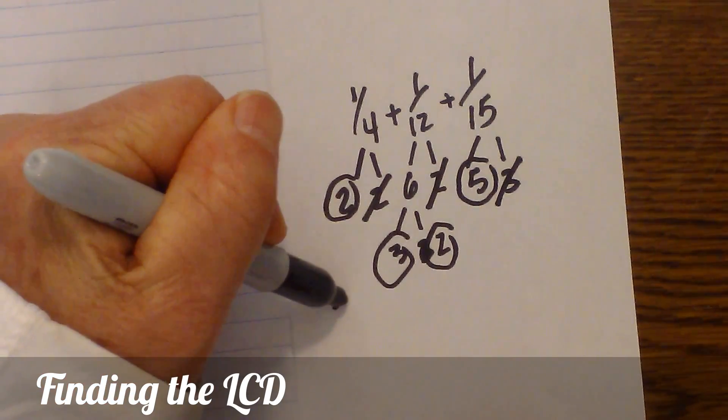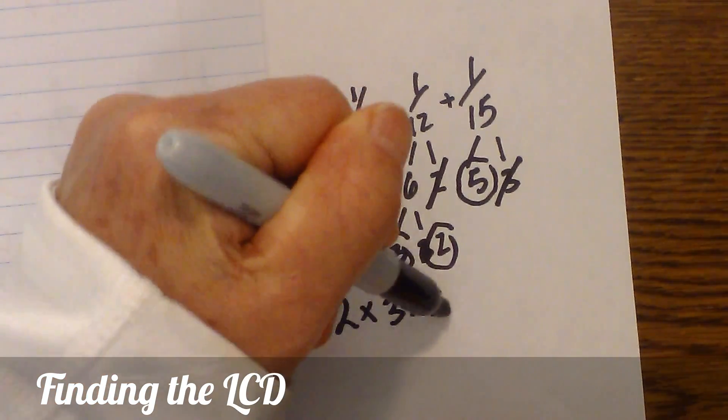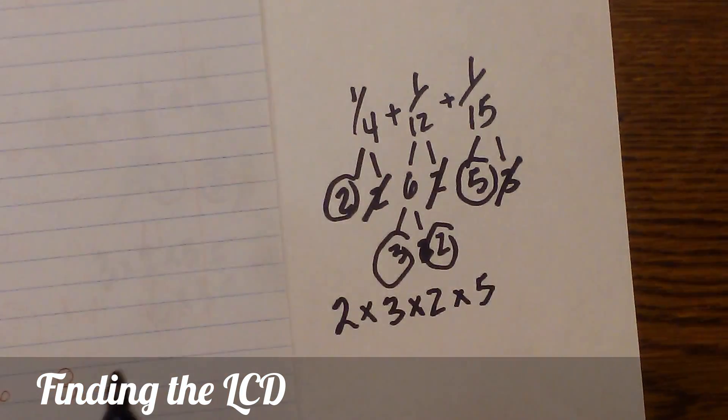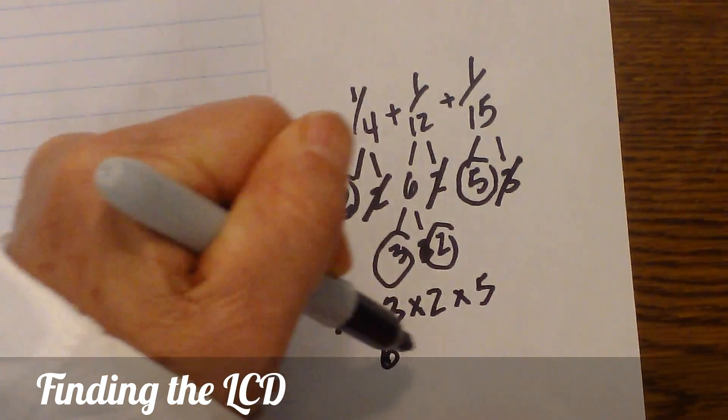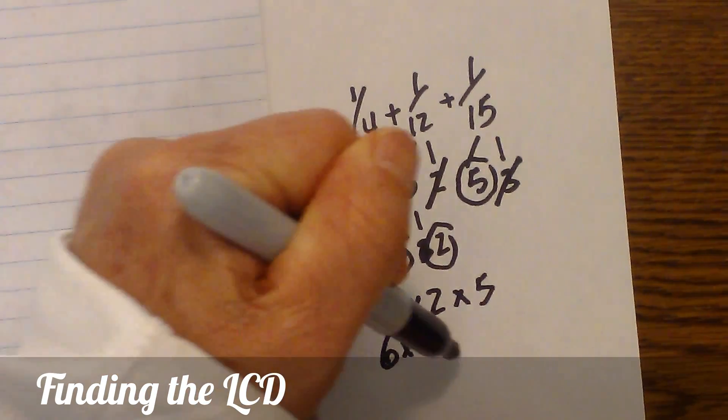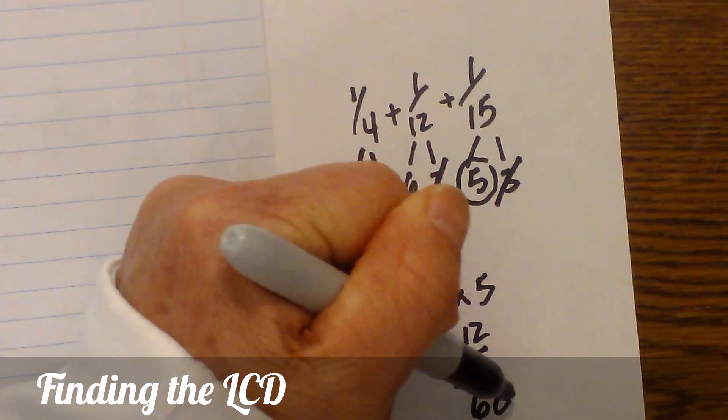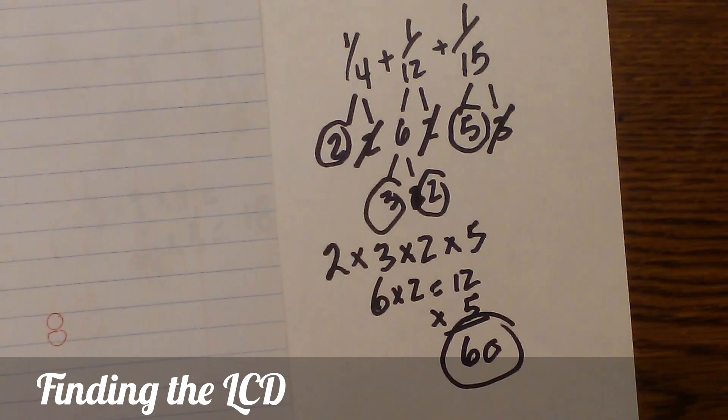Now we just write down the numbers that are circled: two times three times two times five. This will give us the lowest common denominator. Two times three is six, six times two is twelve, and twelve times five is sixty. So there is our lowest common denominator.